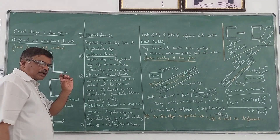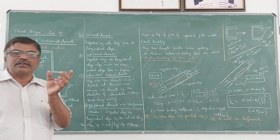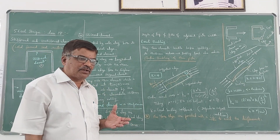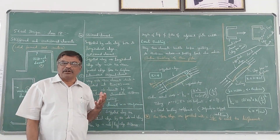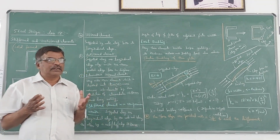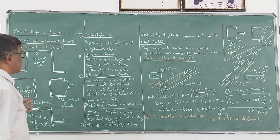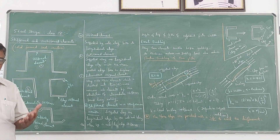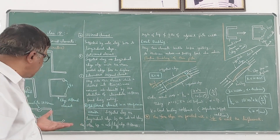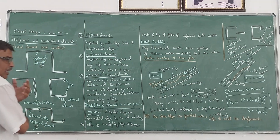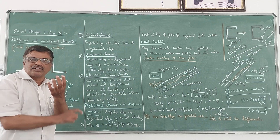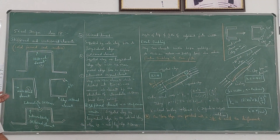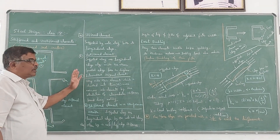In cold-formed sections, thin rolled sections are used. When the section becomes thinner and thinner, its buckling load also reduces — that means the effect of buckling will be more if the section is thinner. Whatever the type of load, whether compression or bending moment, the buckling effect has to be considered. Now let us see how we can define those types of elements.